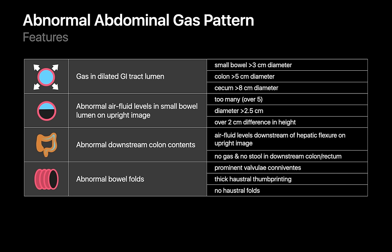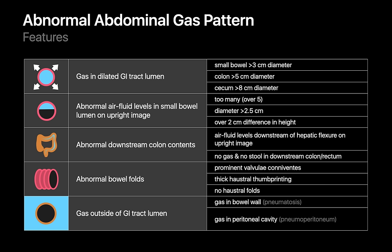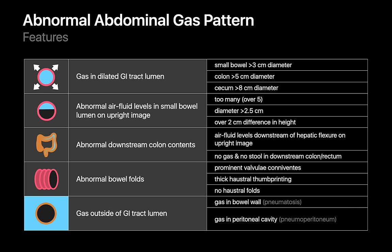It's not normal when the valvulae conniventes of the small bowel are prominent. It's also not normal if the colonic haustra are entirely absent or markedly thickened — especially if so thickened that thumb printing begins to occur. And always be careful whenever intra-abdominal gas does not appear to be situated inside the GI tract. The presence of any of these findings in the setting of abdominal pain should prompt us to look for a mechanical bowel obstruction, adynamic ileus, inflammatory bowel disease, sentinel small bowel loop, toxic megacolon, or pneumoperitoneum.